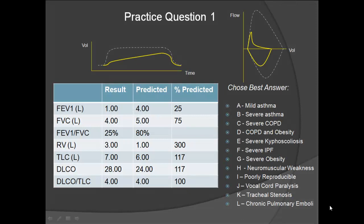The first question is listed here. There are spirograms on the upper left, flow volume curves, a table of the PFT data, and a choice of 12 answers. Choose the best answer that fits the pattern of the spirometry, flow volume curve, and the table. Don't forget you can pause if you'd like to look a little bit longer.